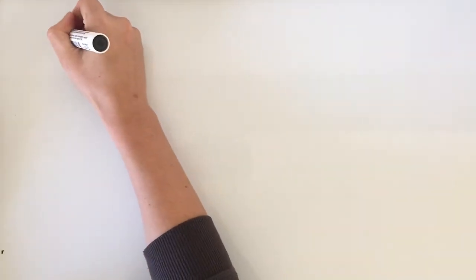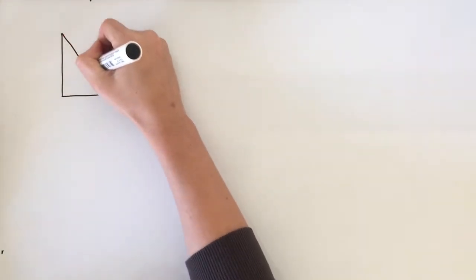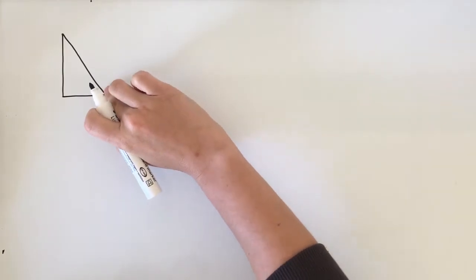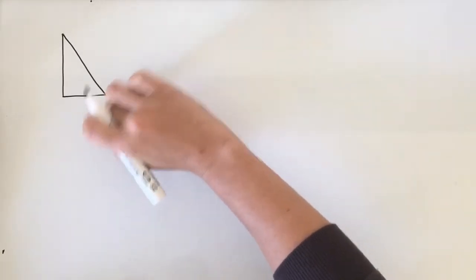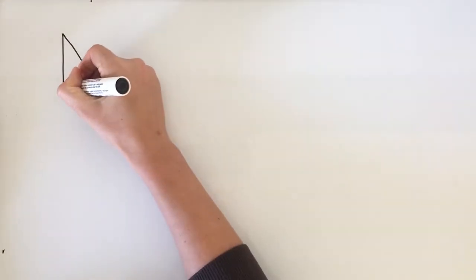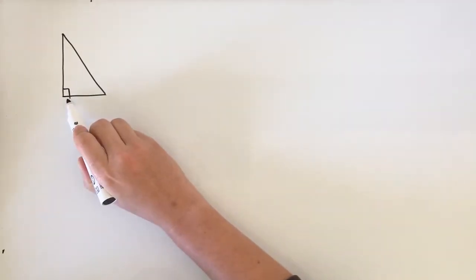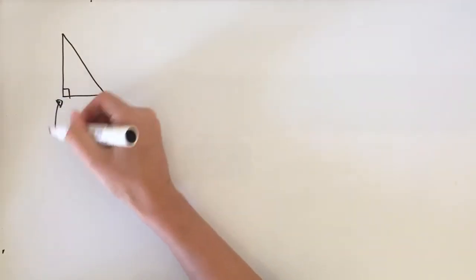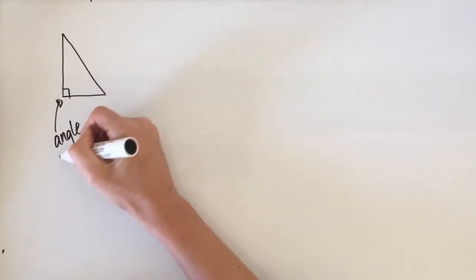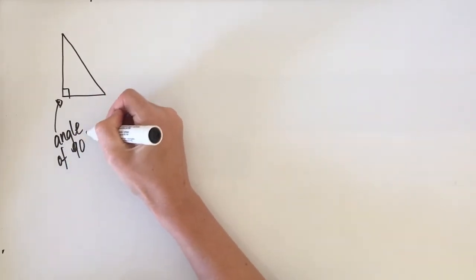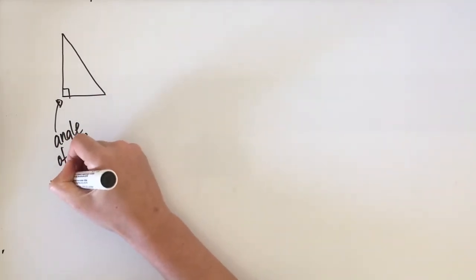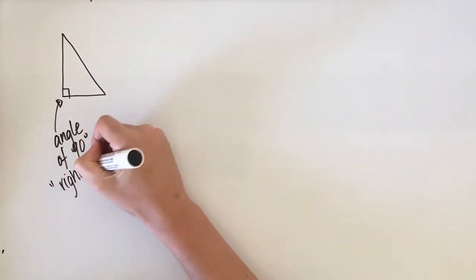Pythagoras was a mathematician who came up with a special formula to determine if triangles are right-angled, but also you could use his formula to find unknown side lengths in triangles. Today we're just looking at whether or not a triangle is right-angled. This little symbol here means a right angle, which is an angle of 90 degrees.